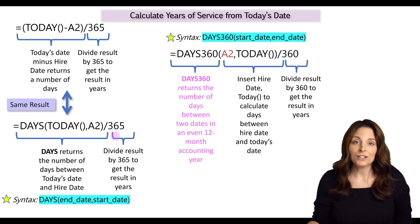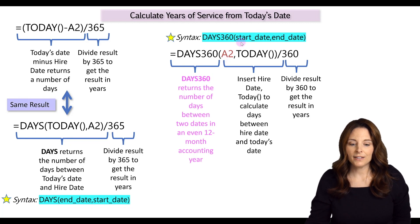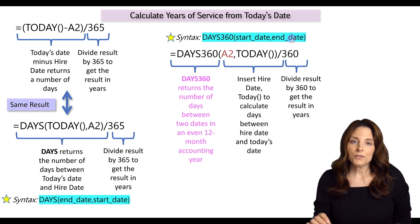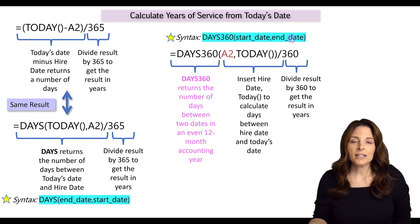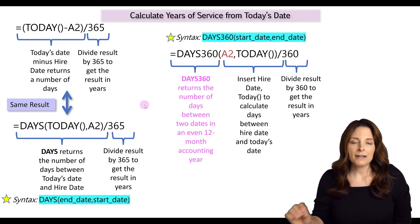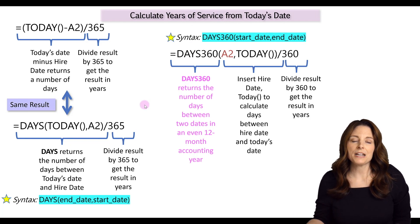Another function you can use is DAYS360. Notice that the syntax is a little different from DAYS — with DAYS the syntax is end date, comma, start date; but with DAYS360 it's start date, comma, end date. You would want to use DAYS360 if your organization uses an even 12-month accounting year. If you use this formula, you'll get a very similar result as the first two options, though you might see a slight difference if you round out to multiple decimals.